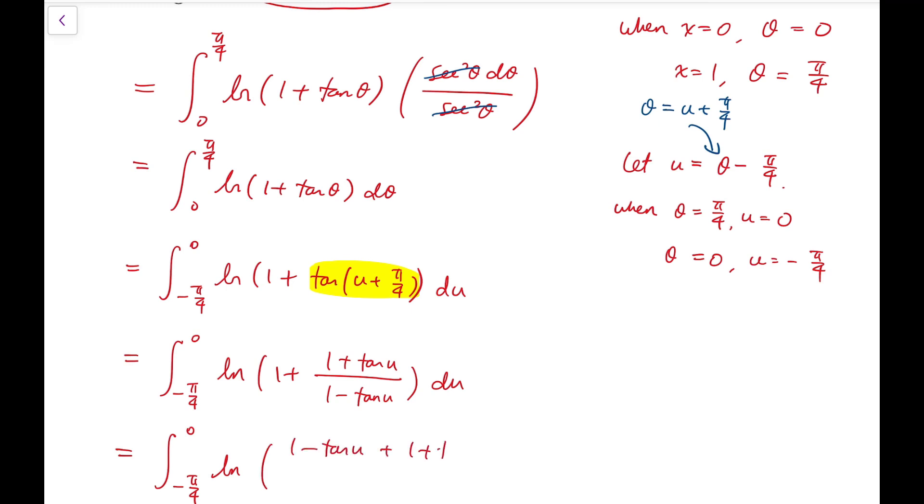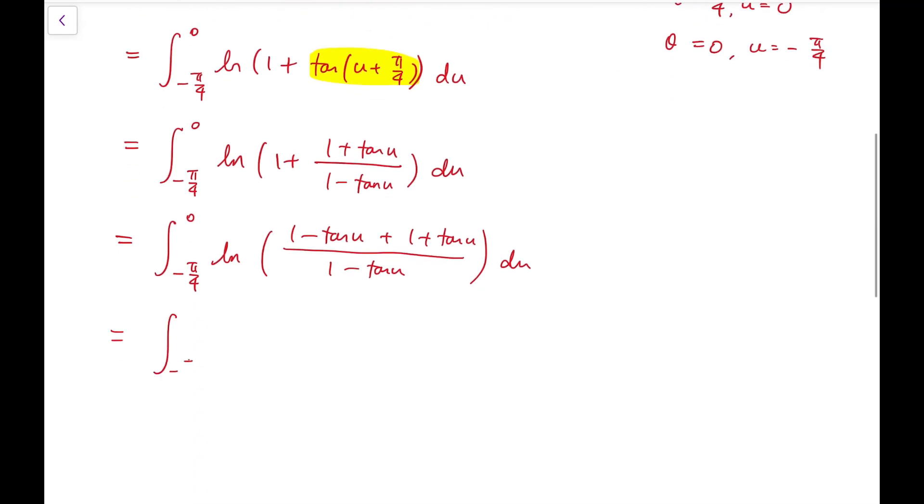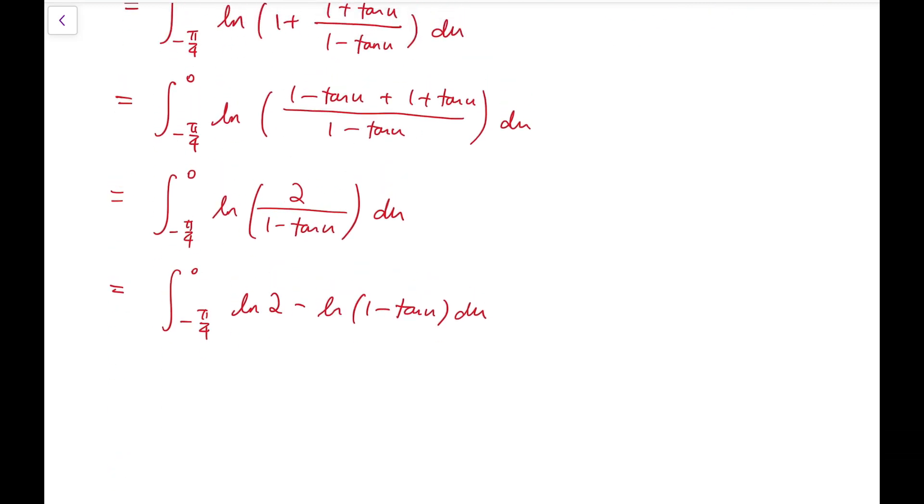Simplifying, I have natural log of 2 over 1 minus tangent u du. Now I need a few more steps to show you the key for this trick. I can separate the natural log of this quotient into log 2 minus log of 1 minus tangent u du, and I can separate this integral into just integrating natural log of 1 minus tangent u du.